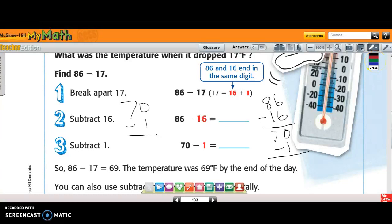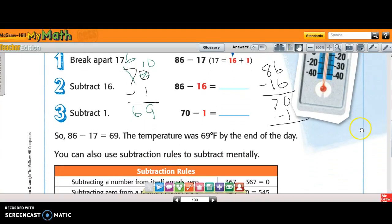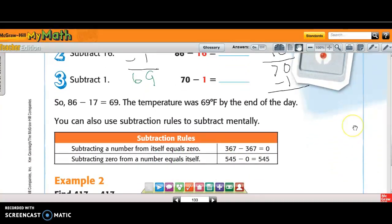I borrow from the 7 that makes it a 6. The one that borrowed goes next door, instead of 0, I get 10. Now can I subtract? Yeah, so 10 minus 1 is 9, and 6 minus 0 is 6. How much did the temperature drop? And it went all the way down to 69.